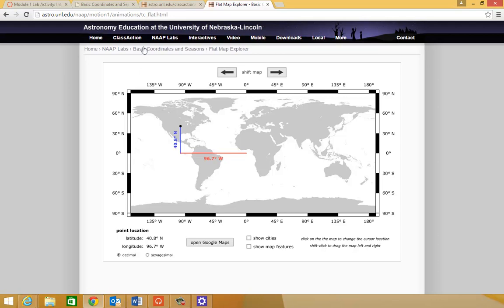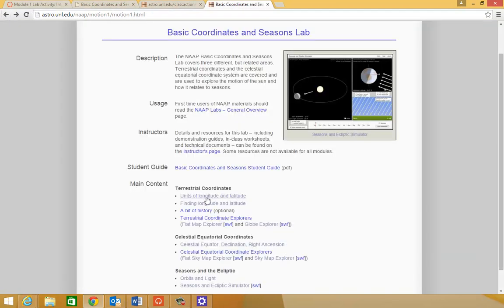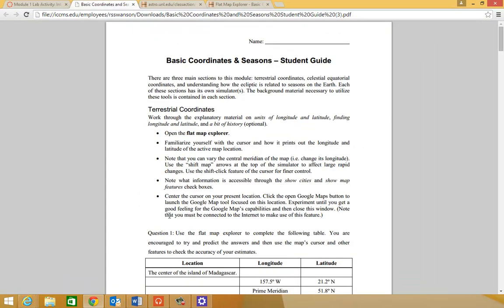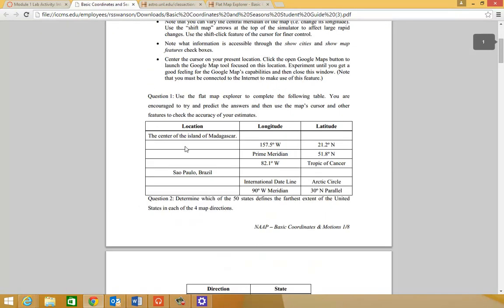I encourage you to go through the background material associated with this lab. Notice there are units of longitude and latitude, finding longitude and latitude. That will explain what longitude and latitude are. But assuming you've gone through that, I want to show you how to get the student guide completed. You're supposed to pick out different locations.